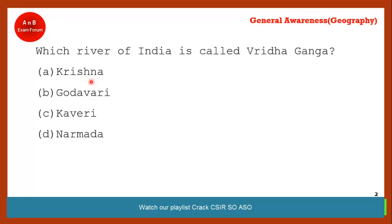Which river of India is also called Vridh Ganga? The correct answer is option B — Godavari. Students watching on YouTube, please note: Godavari is also known as Vridh Ganga and Dakshin Ganga.